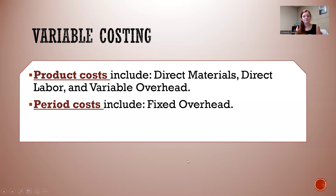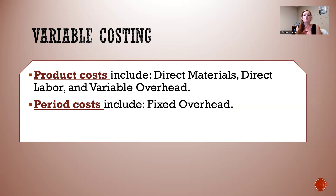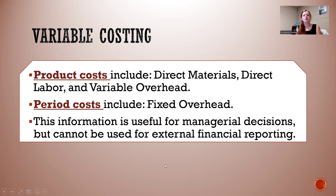The word 'variable' means things that are going to change each time — they're not fixed costs, they're going to change in amount. The period costs, which are things expensed out immediately, would be our fixed overhead. So we really use variable costing just for internal use, to help determine how much we're spending on creating products without including fixed overhead — it is never used for external reporting, only for managerial purposes.